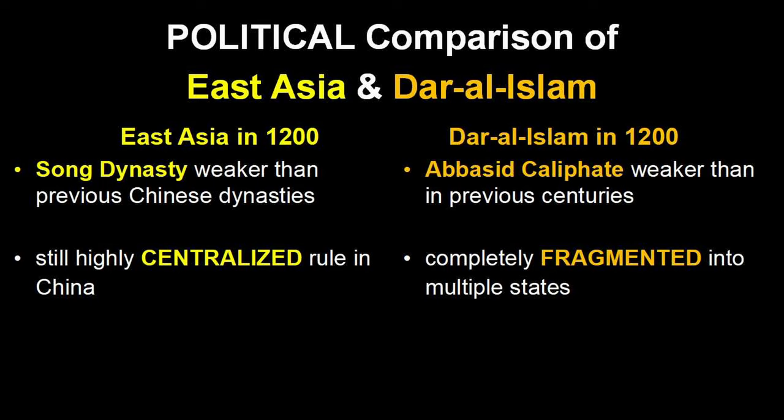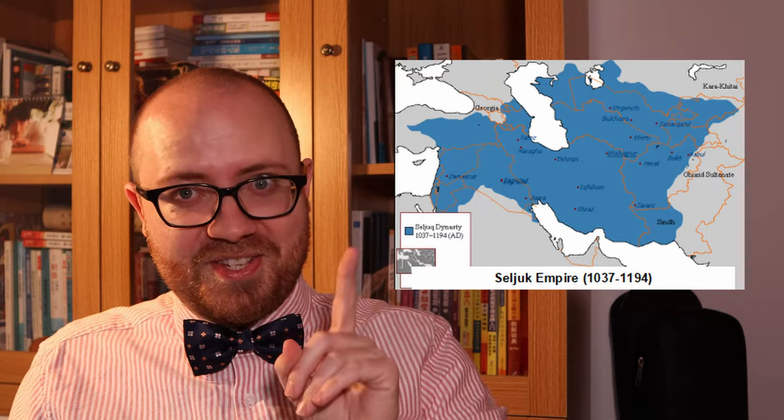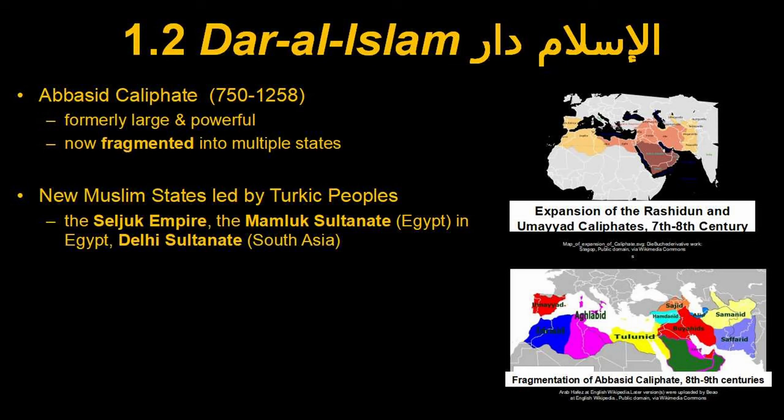Within the Abbasid Caliphate, there are multiple new Muslim states, many led by Turkic peoples. The three the College Board mentions are the Seljuks, the Mamluks, and the Delhi Sultanate. They are all led by sultans, who only really defer to the Abbasid Caliph on religious and spiritual matters. Politically, they do what they want, and all of these are very powerful states with very effective militaries. These Turkic states continue to expand the rule and influence of Islam, so even though the Abbasid Caliphate is in decline in 1200, Islam and Islamic rule is definitely not.